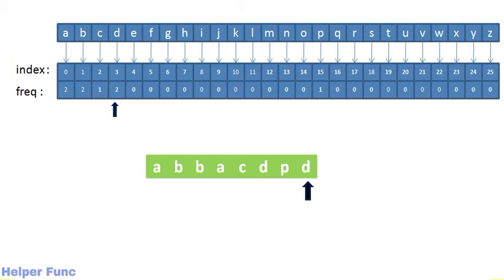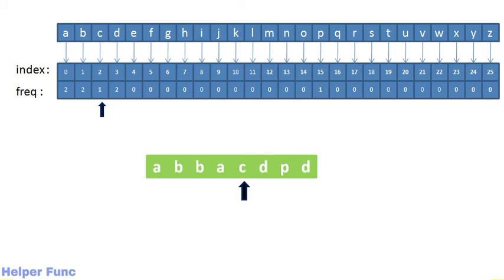Now we have traversed the string and know how many times each character appears. In the next step, we traverse the string again. Whenever we encounter a character whose frequency is 1, we have found our answer. A has frequency 2, so we move ahead. B has frequency 2, so we move ahead. The same happens for the next B and A. At C, frequency is 1 — C is present only once and is unique. We return its index, which is 4, as our answer.